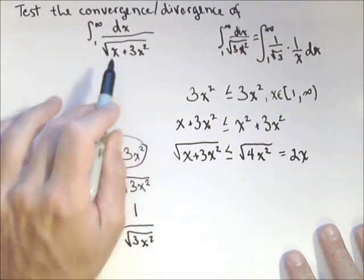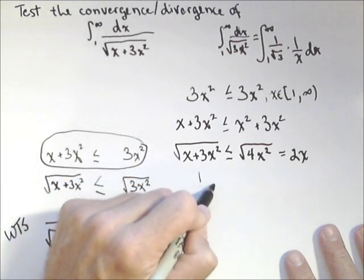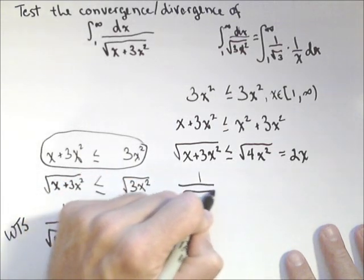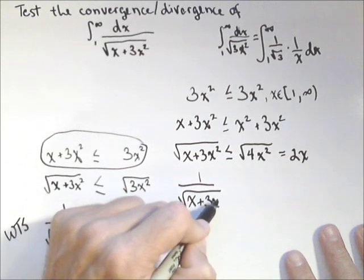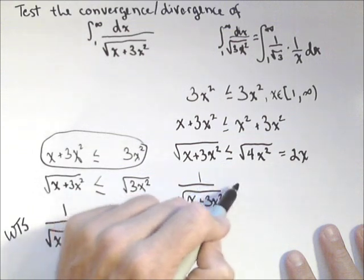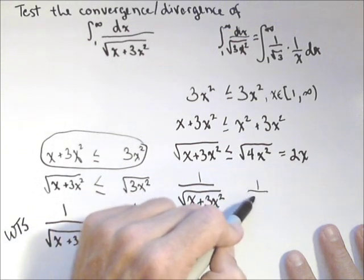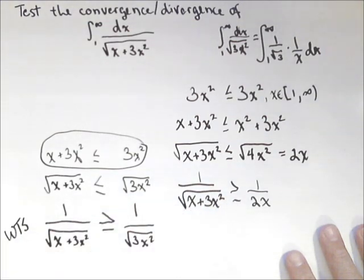So now I need to flip this so I can get back to my integrand. So I'm going to have one over square root of x plus three x squared. And when I flip both sides of my ratio, I get to flip my inequality. Notice what this is.